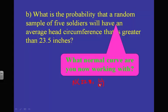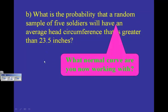That's your new standard deviation — it's no longer 1.1. So when we calculate this probability using normCDF: lower is 23.5, upper is 99999, mean is 22.8, and the standard deviation is now 1.1 divided by the square root of 5, because we're dealing with five soldiers instead of a single soldier.